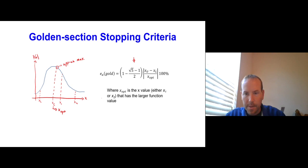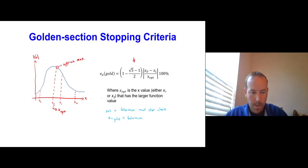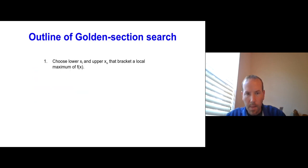Basically, what it involves is calculating the XU and the XL and the xopt. Where xopt is our current optimum. It's the x value that has a larger function value on it. That's how we stop. Basically, you'd have to set a tolerance, and then you stop where EA_gold is less than the tolerance.